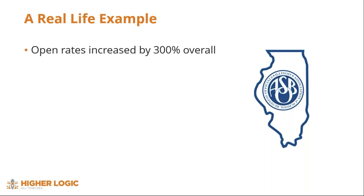A couple of factors went into the 300% open rate increase. First, the promotions were much more highly targeted, focused on people who attended last year as well as individuals who had shown interest in the topics being covered at the annual conference. They also increased their deliverability significantly by switching to our email marketing system, which has about a 98 percent deliverability rate — an industry high — with a team solely dedicated to ensuring emails land in members' inboxes.